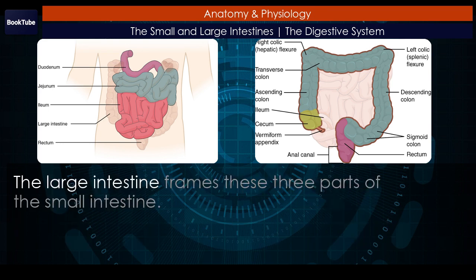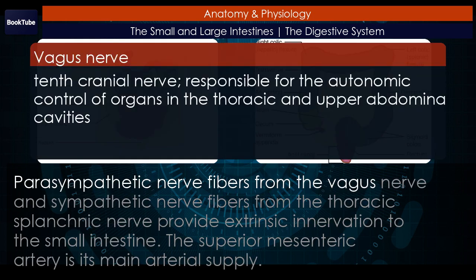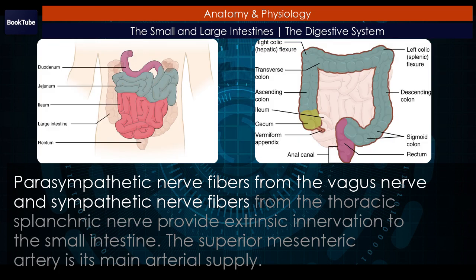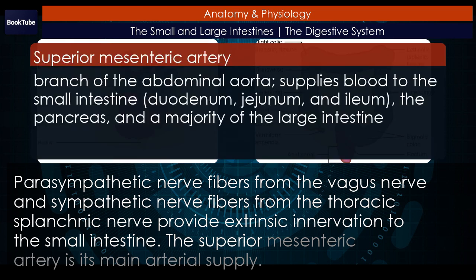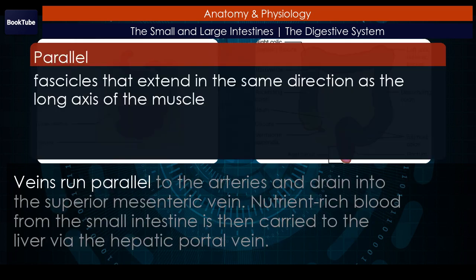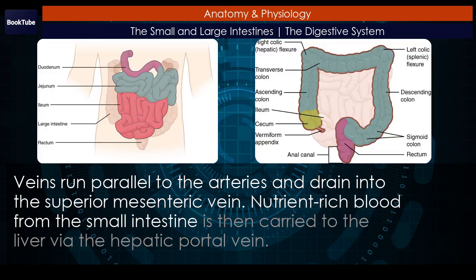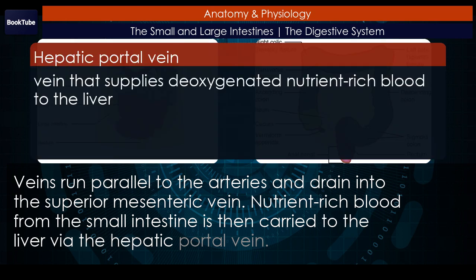The jejunum and ileum are tethered to the posterior abdominal wall by the mesentery. The large intestine frames these three parts of the small intestine. Parasympathetic nerve fibers from the vagus nerve and sympathetic nerve fibers from the thoracic splanchnic nerve provide extrinsic innervation to the small intestine. The superior mesenteric artery is its main arterial supply, and veins run parallel to the arteries and drain into the superior mesenteric vein. Nutrient-rich blood from the small intestine is then carried to the liver via the hepatic portal vein.